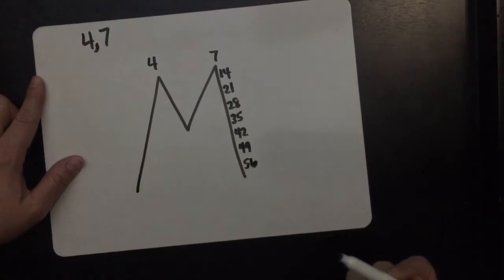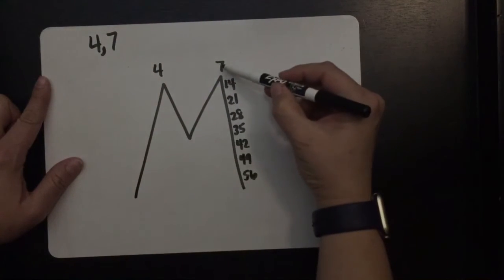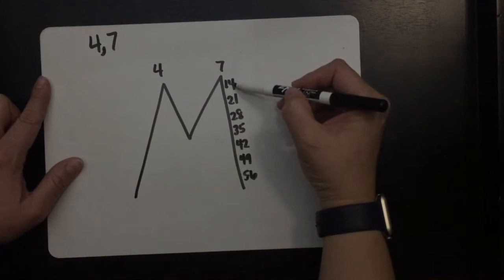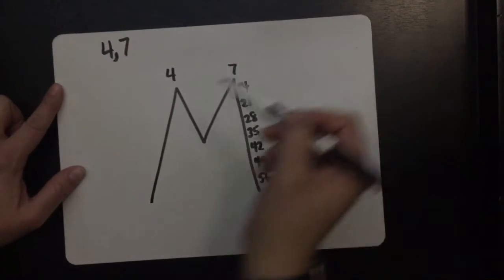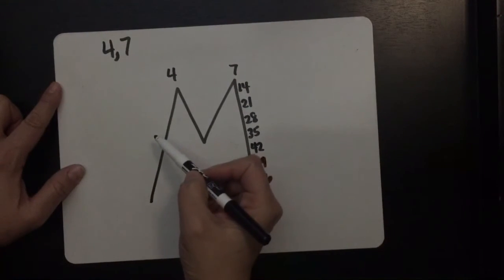So you have 7, 14, 21, 28, 35, 42, 49, 56, and I'll stop there. By the way, if you notice this is 7 times 1, 7 times 2, 7 times 3, 7 times 4, 7 times 5, and so on. We're going to do the same thing to this side except with 4.